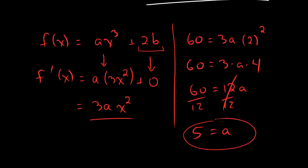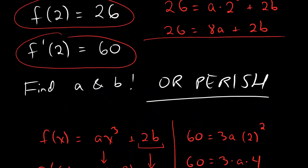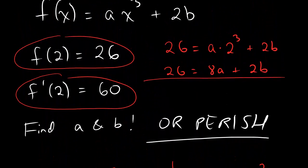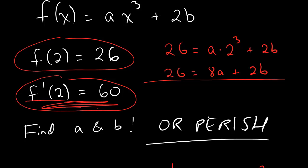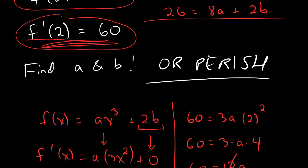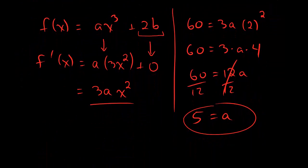And remember, dudes, I did not do anything fancy or anything that you couldn't have thought of on your own. All I did was look at this thing right here that said f prime of 2 equals 60 and say, okay, that means I can take the derivative, plug in 2, set it equal to 60, and then if I'm able to solve, I can solve and good for me. In other words, I took the information they gave me and I just wrote down what it means. No big deal. You guys could totally do the same. Alright, so we get a equals 5.